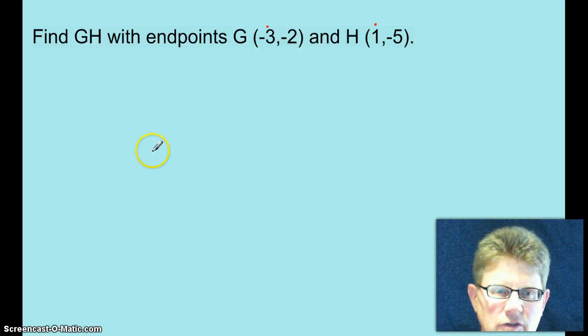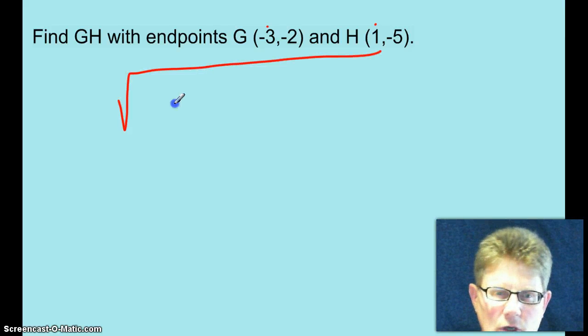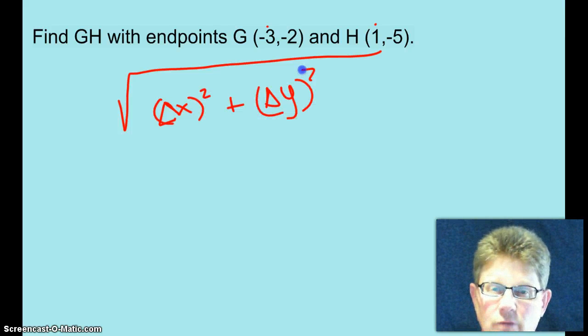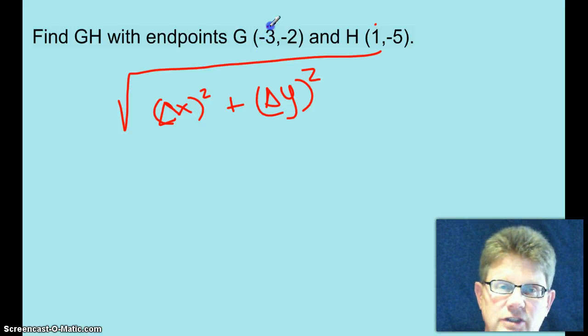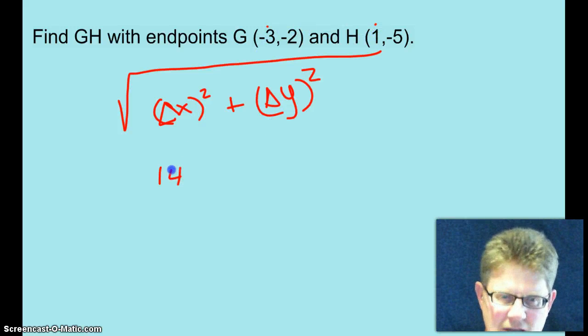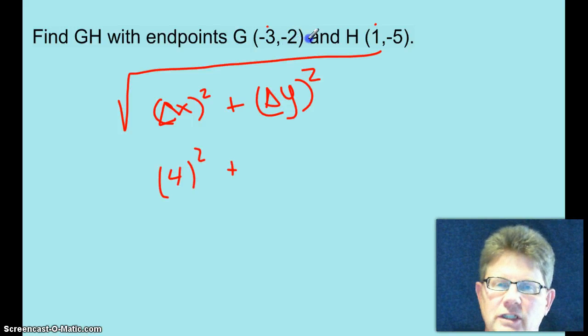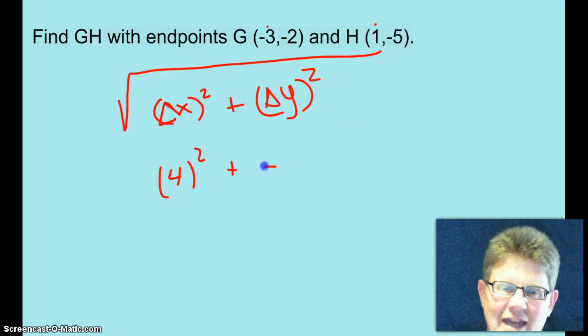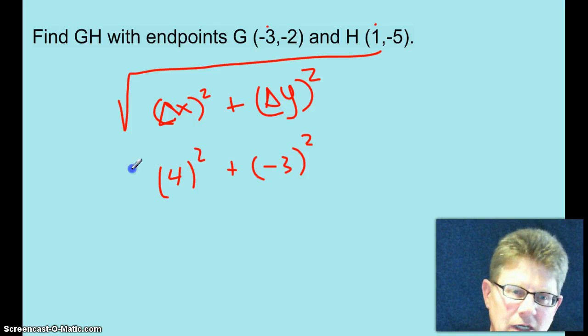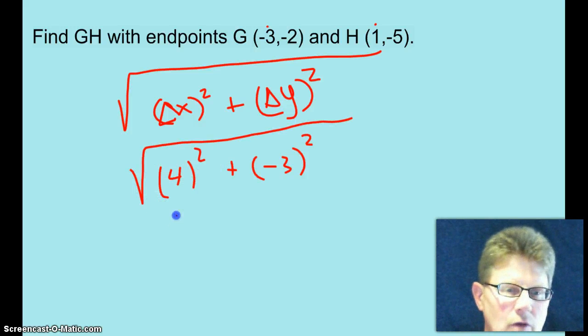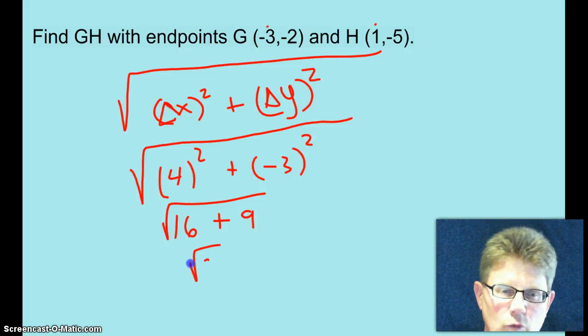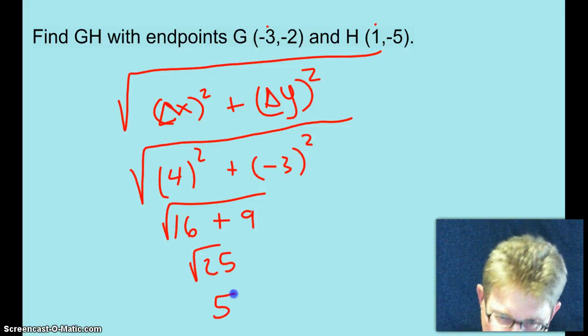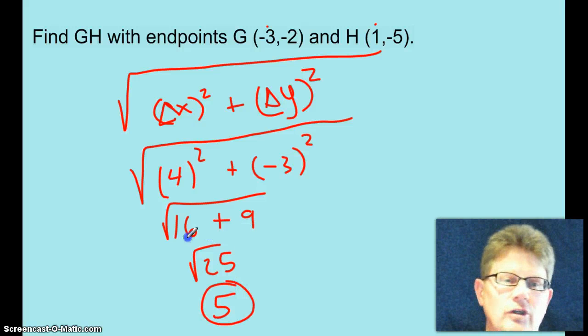All right, how much did the X's change? We'll start off with the square root of delta X quantity squared plus delta Y quantity squared. Notice this is how I'm starting off. This is how I expect you to start off each one of these distance formula problems. All right, how much did the X's change from negative 3 to 1? 4 is correct. 4 squared. And how much did the Y's change from negative 2 to negative 5? They went down 3. Make sure you put that in parentheses when you put it in a calculator, if you're using a calculator. Because otherwise, you will get this next part wrong. It's 16 plus 9. Square root of that. That would be the square root of 25. And that, everybody knows, is 5. So that's how you use the distance formula.